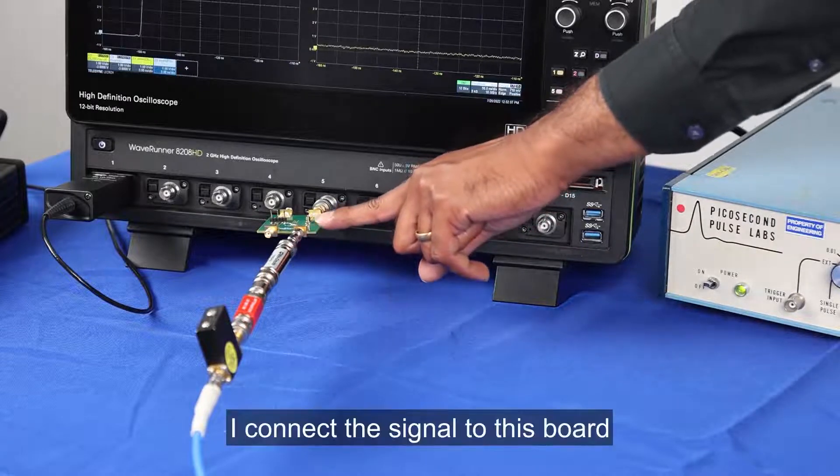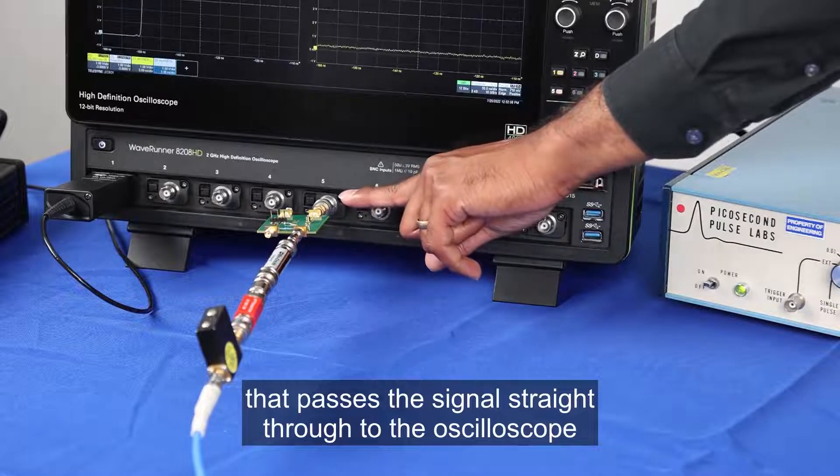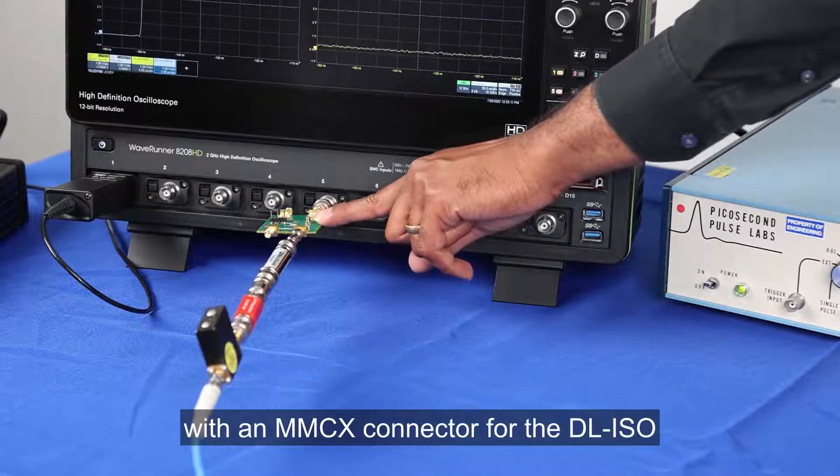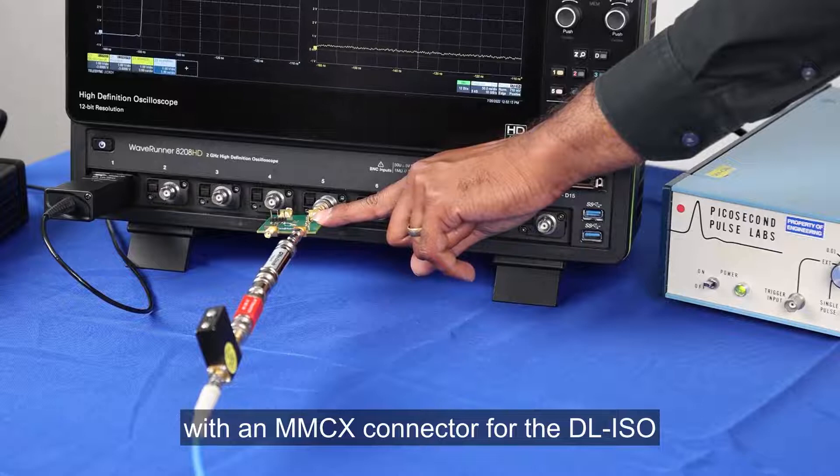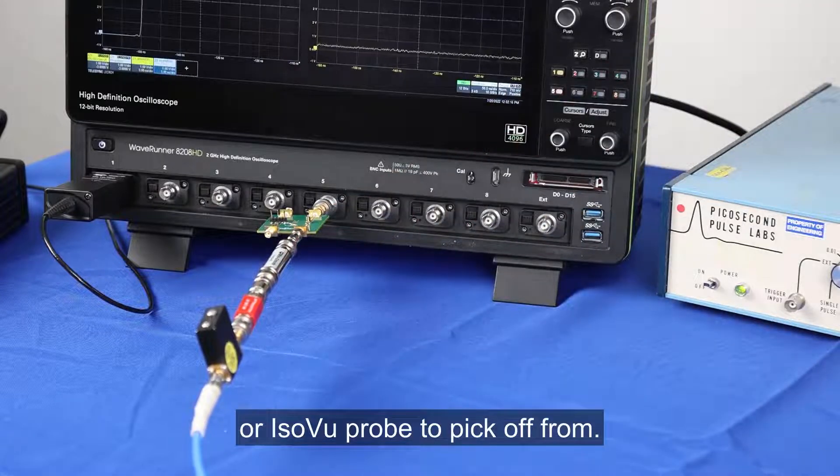I connect the signal to this board that passes the signal straight through to the oscilloscope with an MMCX connector for the DL ISO or ISO view probe to pick off from.